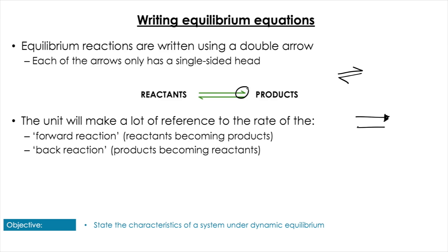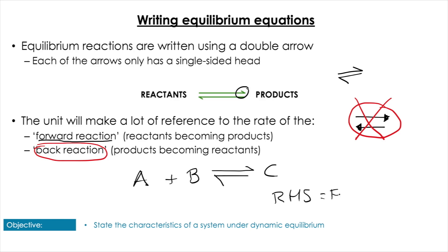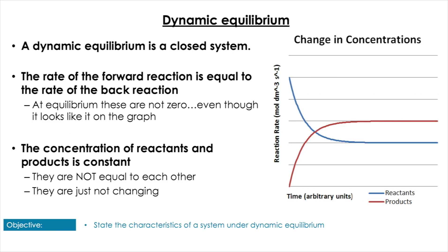How do we write these? We use the equilibrium sign, characterized by one half-arrow going one way and one half-arrow going the other way on top of each other — we do not put two full arrows. We describe the forward reaction as going from left to right, from reactants to products, and the backwards reaction going from products to reactants. Moving to the right-hand side is going forward and moving to the left-hand side is going backward.